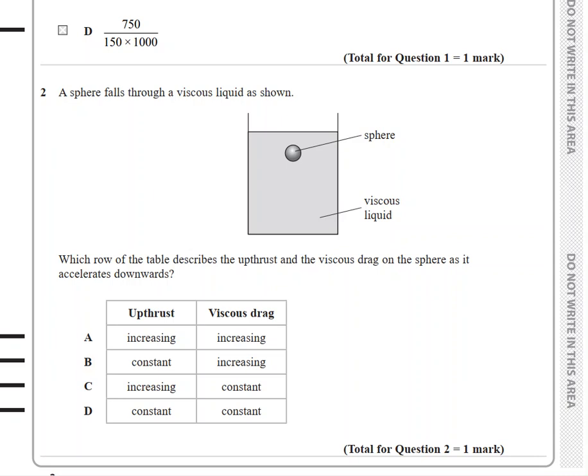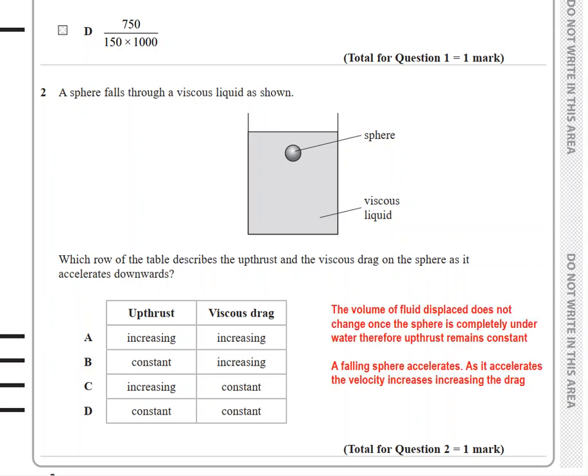The volume of the fluid displaced does not change once the sphere is completely underwater, and therefore upthrust remains constant. But as it is falling, the sphere accelerates and as it accelerates the velocity increases, which increases the drag. So upthrust remains the same, viscous drag increases.